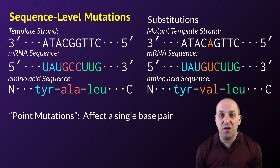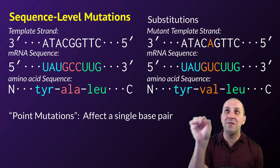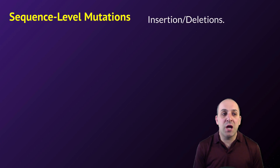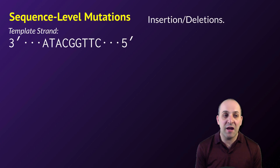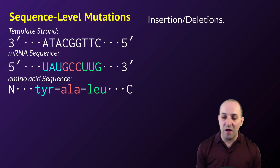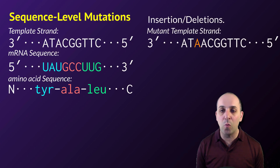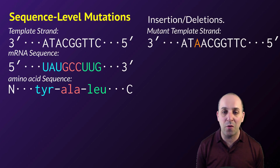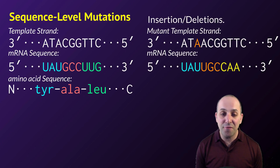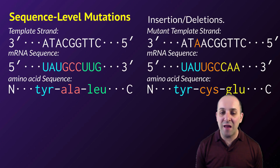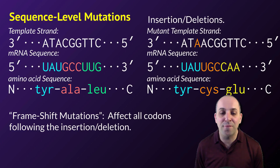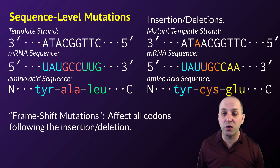Substitution mutations are generally referred to as point mutations because only one spot in the DNA is being affected. The other major type of sequence-level mutations are insertions or deletions. An insertion or deletion works exactly like you'd think — an extra base is either inserted or one is removed from the strand. In this case, we've inserted an additional adenine nucleotide into our template strand, leading to a different mRNA sequence and a very different amino acid sequence.